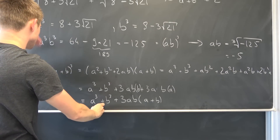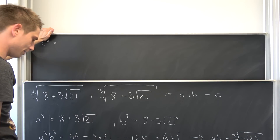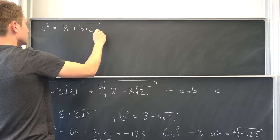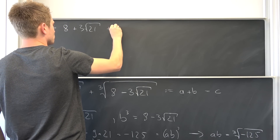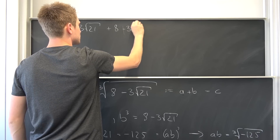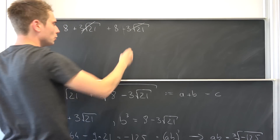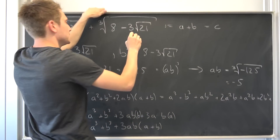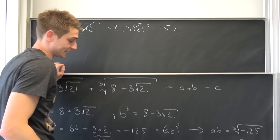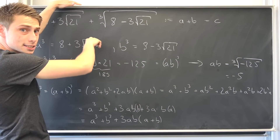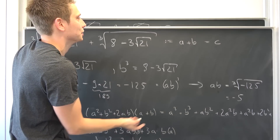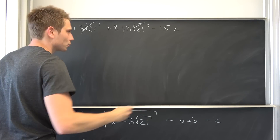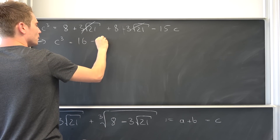This is cool because we now have c³ equals something and then times c right here. Rewriting: a³ is 8 plus 3 square root of 21, plus b³ which is the conjugate 8 minus 3 square root of 21 — those square root terms cancel out leaving just 16. Then plus 3 times ab, which is negative 5, so negative 15, times c. So c³ equals 16 minus 15c.